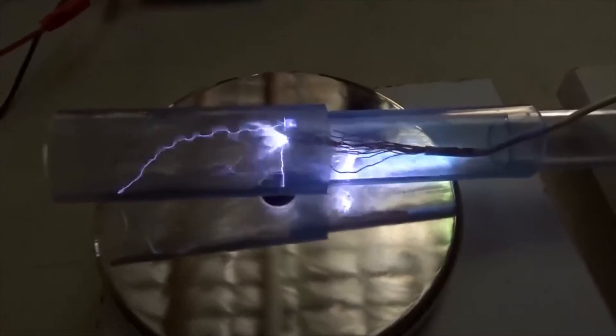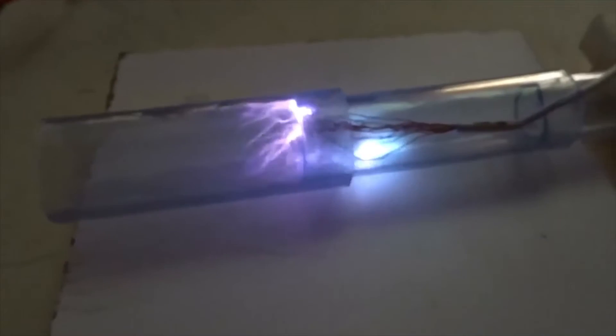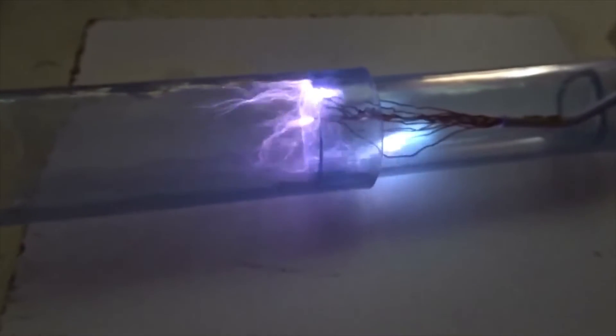If we put a permanent magnet under this Tesla coil we get a really big flame. That's with the shiny side up.